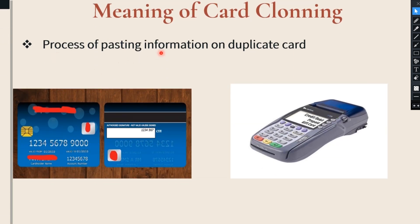Card cloning is the process of pasting the information on a duplicate card. Once they have collected all the information, they will use that information for withdrawing money. In order to withdraw the money from the bank account of the victims, they will prepare duplicate cards. The procedure of preparing duplicate cards is known as card cloning. The duplicate card is also known as a cloned card. The process of pasting information on a duplicate card is known as card cloning. They use a specific device to clone the card or prepare the duplicate card.